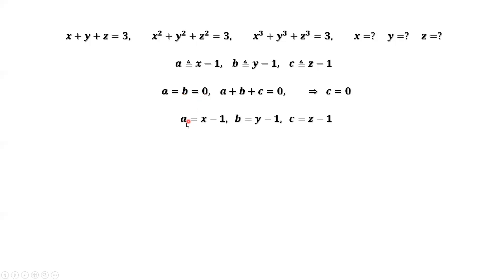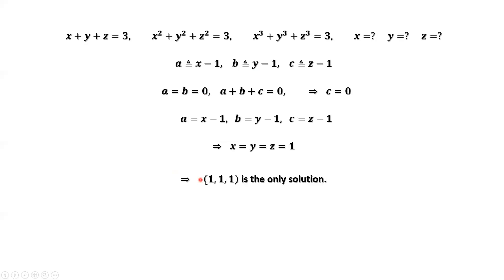By definition, A equals x minus 1, B equals y minus 1, C equals z minus 1. Since A equals 0, x equals 1. Since B equals 0, y equals 1. Since C equals 0, z equals 1. This implies x equals y equals z equals 1. Therefore, (1, 1, 1) is the only solution.